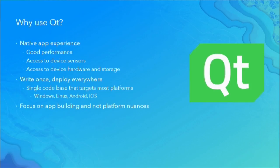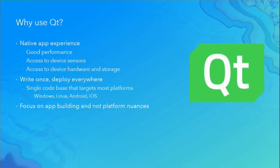With Qt, you write your application once and simply build it for different platforms you want to target — Windows, Linux, Android, iOS — all from the same codebase. A lot of people want a native app but face the challenge of potentially writing four different apps that do the exact same thing. Qt helps you focus on your app building and design instead of platform nuances, like how to use Bluetooth on Android versus iOS.